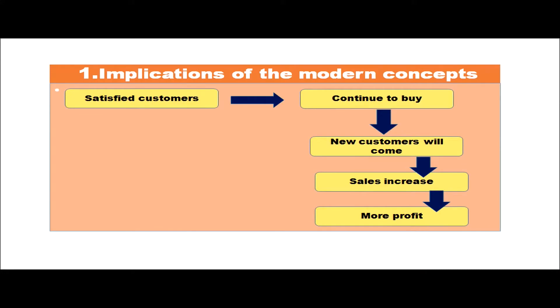By satisfying the consumers, manufacturers or sellers are able to increase their profits. If you can see this diagram, satisfied customers continue to buy the same product — which we call brand loyalty. New customers will also come because satisfied customers by word of mouth tell others to buy that product. When these two things happen, sales will automatically increase, which will lead to more and more profit.